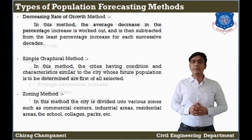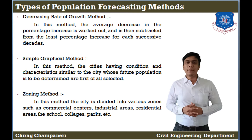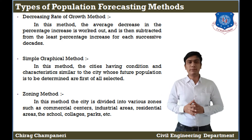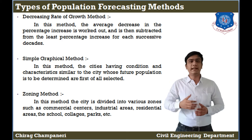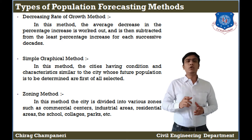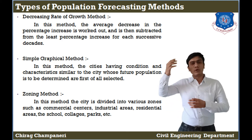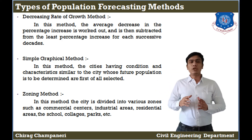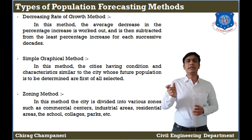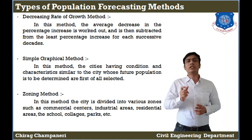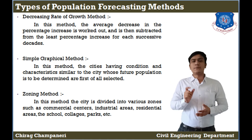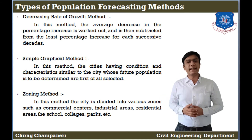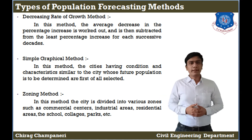Next we will talk about the Decreasing Rate of Growth Method. In this method, we find the percentage of population increase from the previous years. According to that percentage, the rate of population increase decreases proportionally as the town approaches a saturation size.